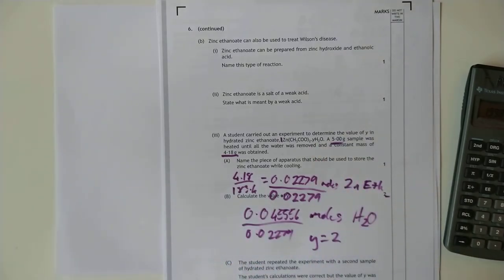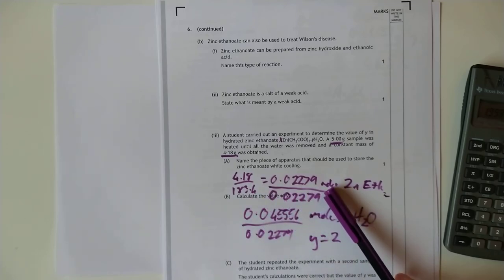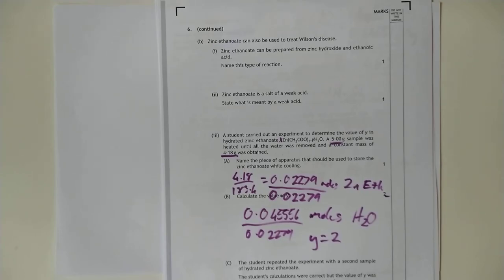Very quick recap on that. Again, what I did there was I looked at the mass of the pure dry substance. I turned that into a number of moles. I then subtracted to find the water that had been blasted off, turned that into a number of moles as well, and then I just found the ratio between them.